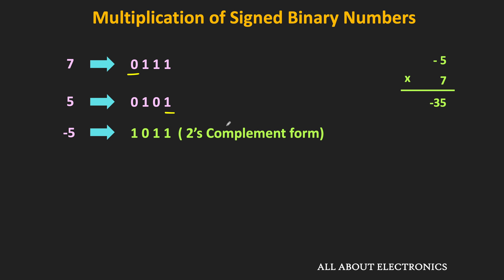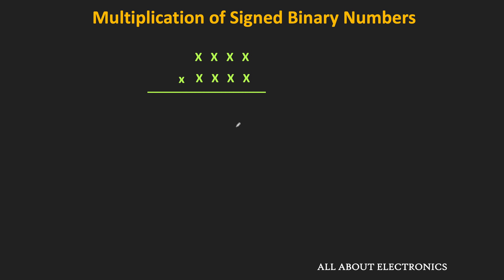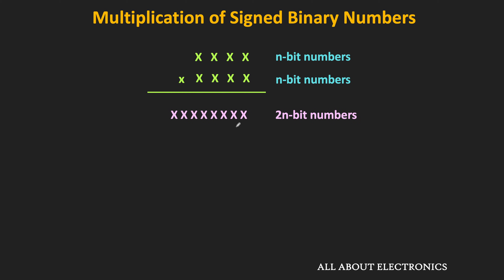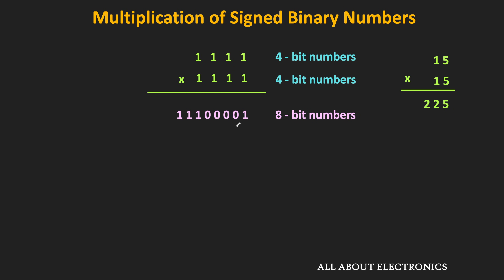So -5 is 1011 and +7 is 0111. When multiplying 2 n-bit numbers, the number of bits in the product will be at most 2n. For example, with two 4-bit numbers, the maximum value is 15, and 15 × 15 = 225, which requires 8 bits to represent. So multiplying two 4-bit numbers gives a product of at most 2n = 8 bits.